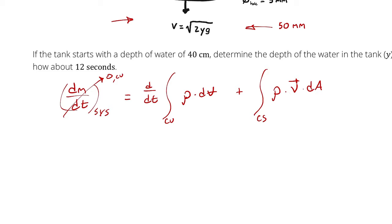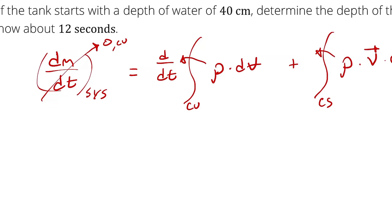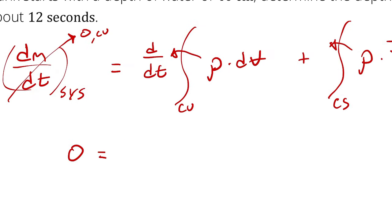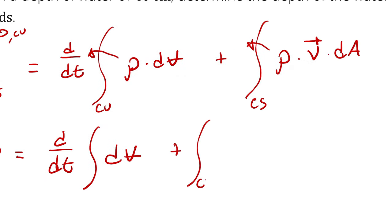So we have 0 equals d/dt of the integral of density with respect to volume, plus the integral across the control surface of density times velocity vector with respect to area. I can simplify it by bringing out the density since I've assumed incompressible flow. Dividing all three terms by density yields: 0 equals d/dt of the integral of dV plus the integral across the control surface of the velocity vector with respect to area.